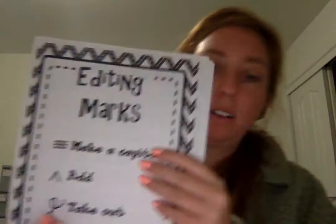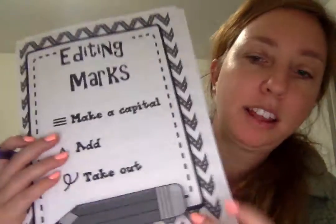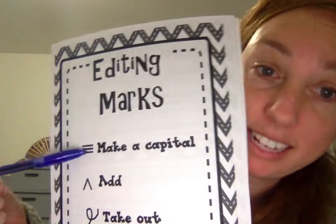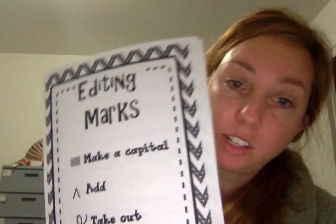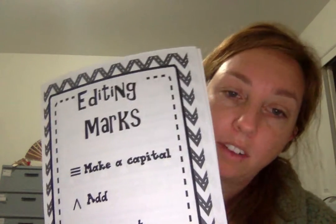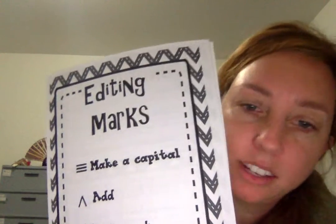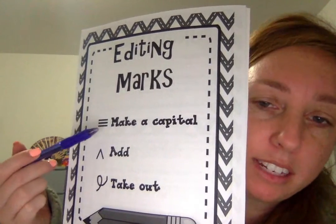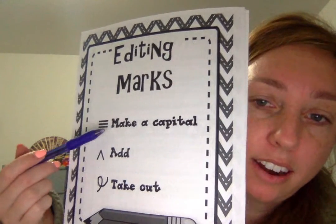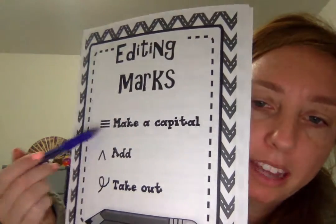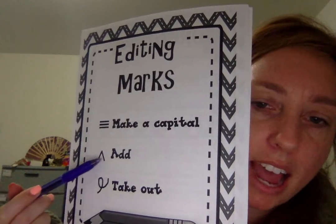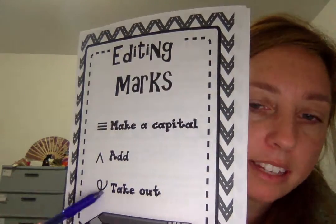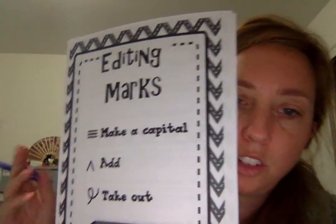Next, editing marks. These are so important. Usually when I or a peer looks over your writing, when you have something written it's really hard to write in between the sentences. So this is the universal system: if this mark is underneath the letter, that means it's uppercase — make it capital. If this mark is there, it means add this in. If this swirly thing is there, it means take that out — it's too much.